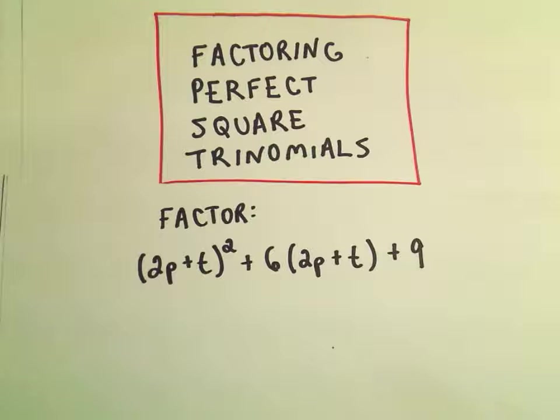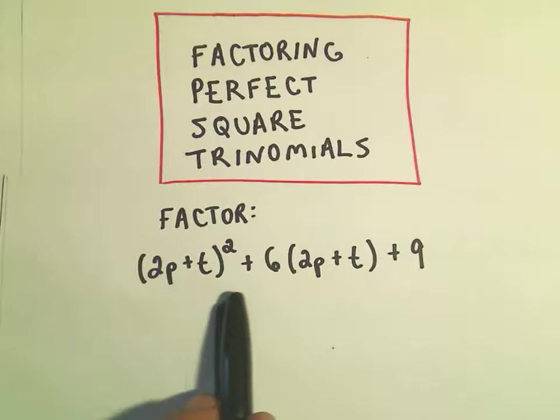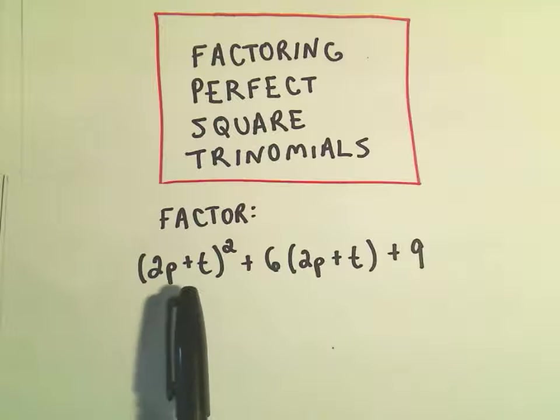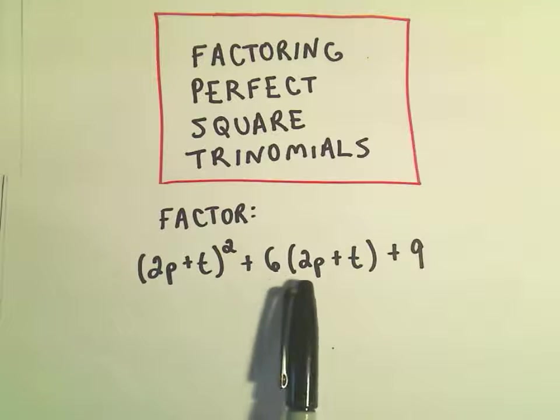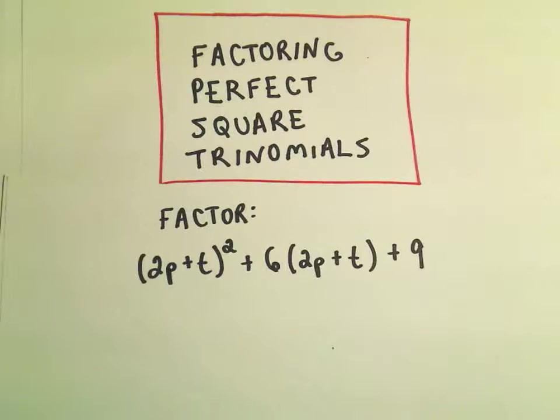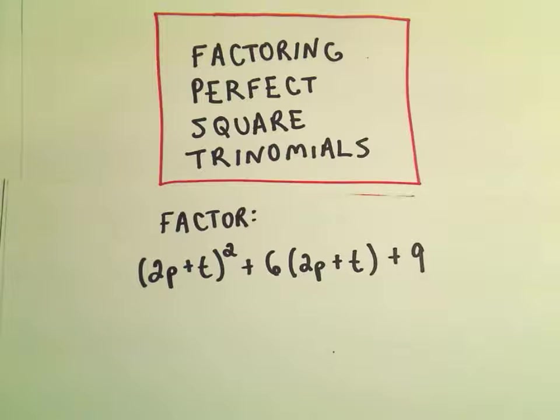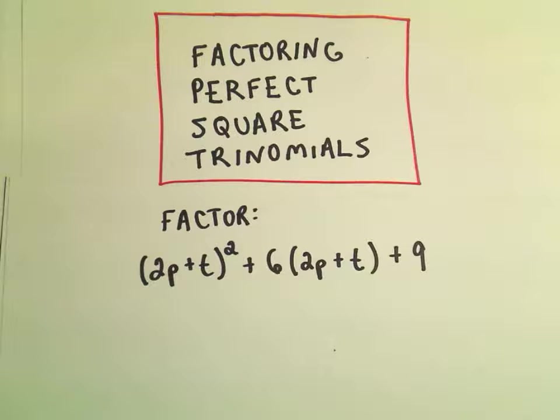Okay, in this video I'm going to do one more example of factoring perfect square trinomials. I'm going to factor this expression (2p+t)² + 6(2p+t) + 9. I think at first this is one of those that looks a little confusing.